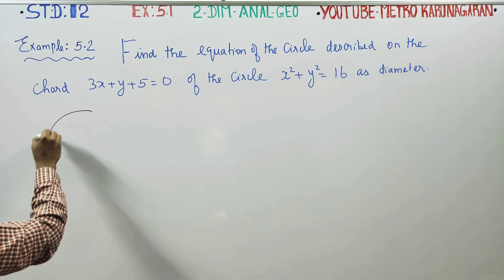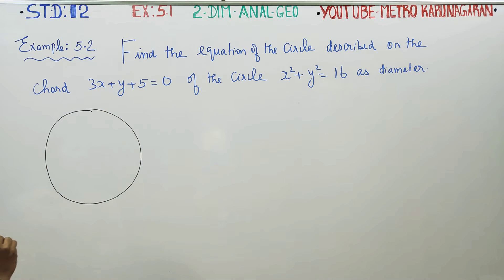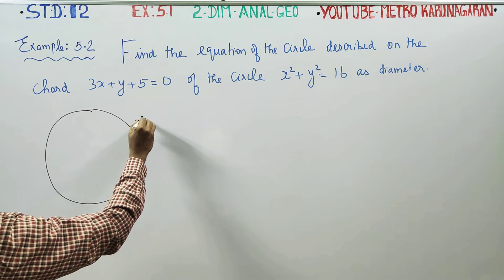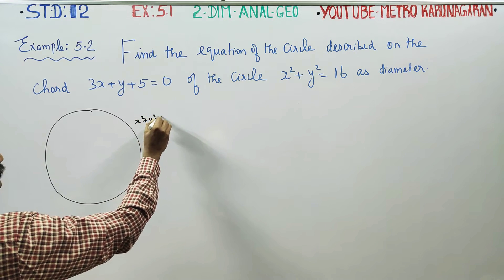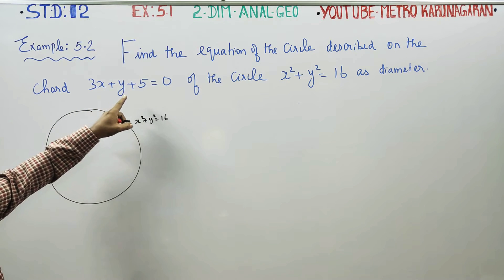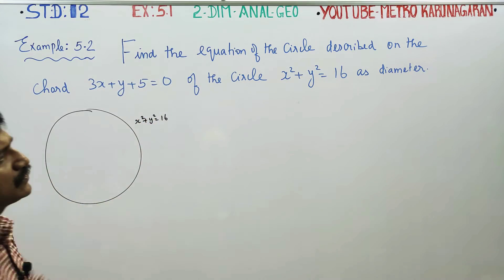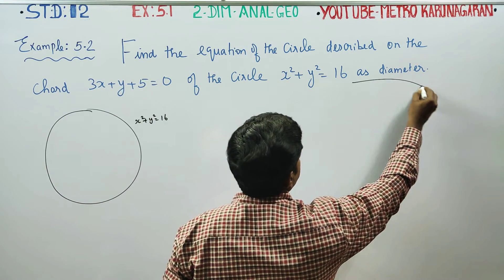We have one circle. The circle equation is x² + y² = 16, and the chord is 3x + y + 5 = 0, which is used as the diameter.